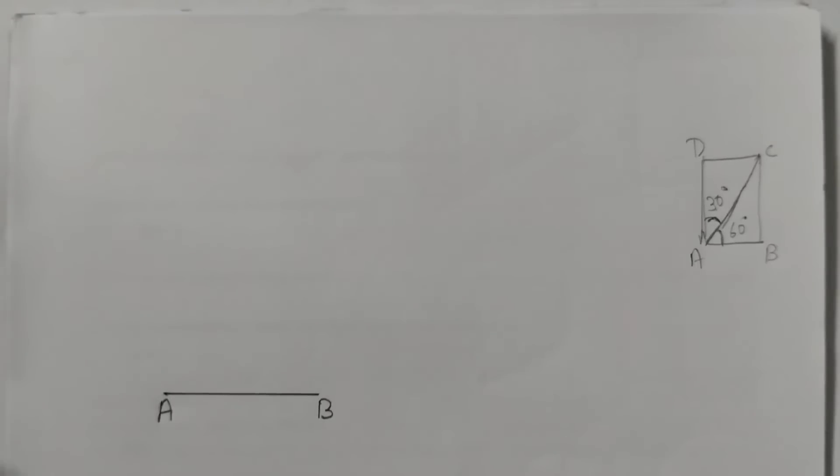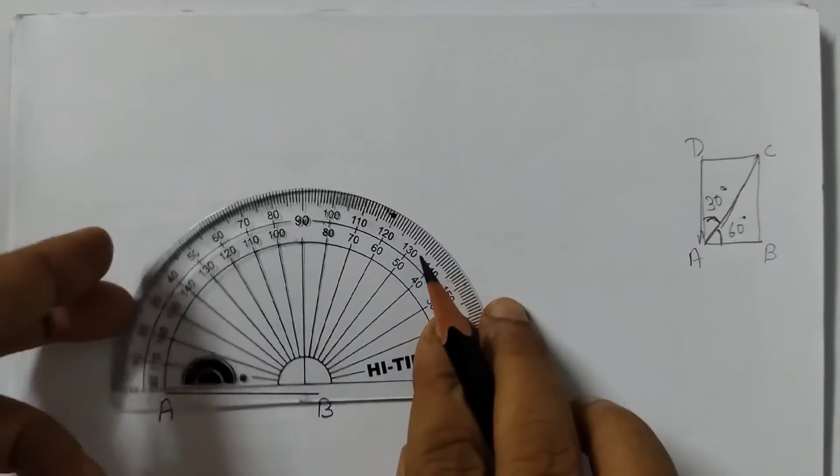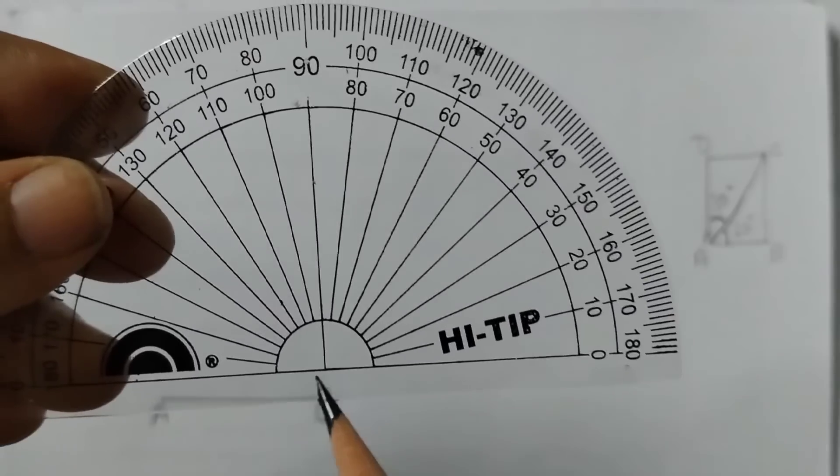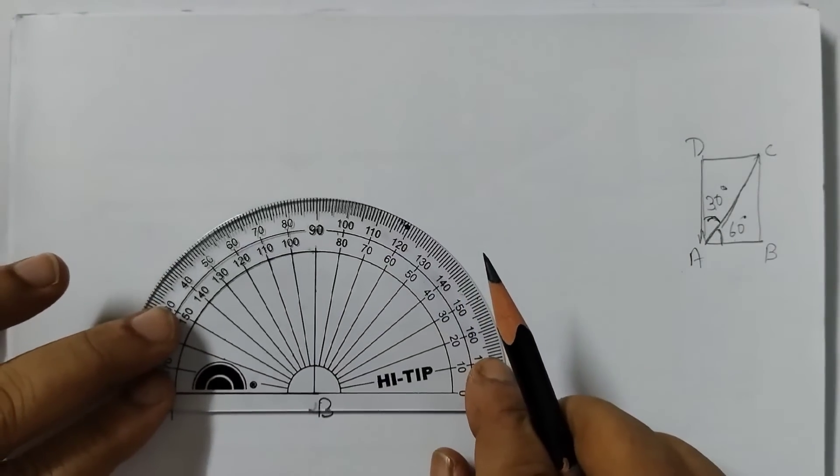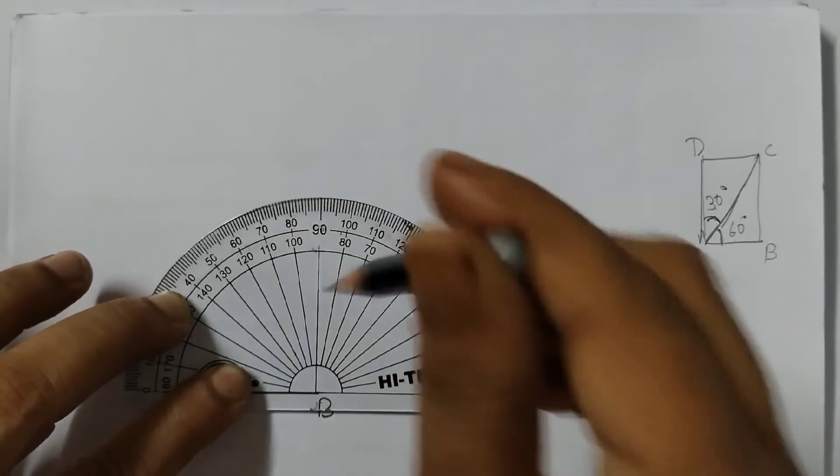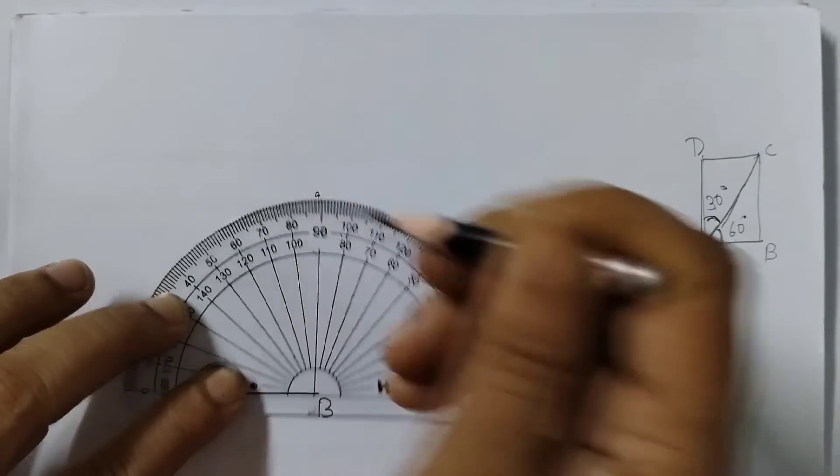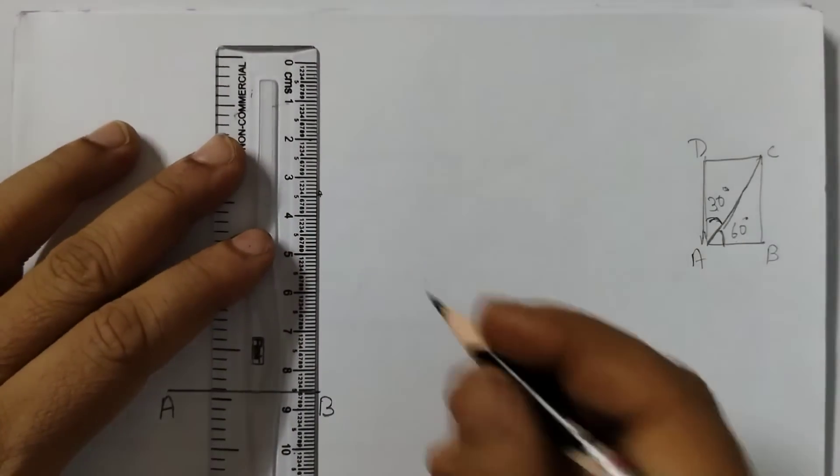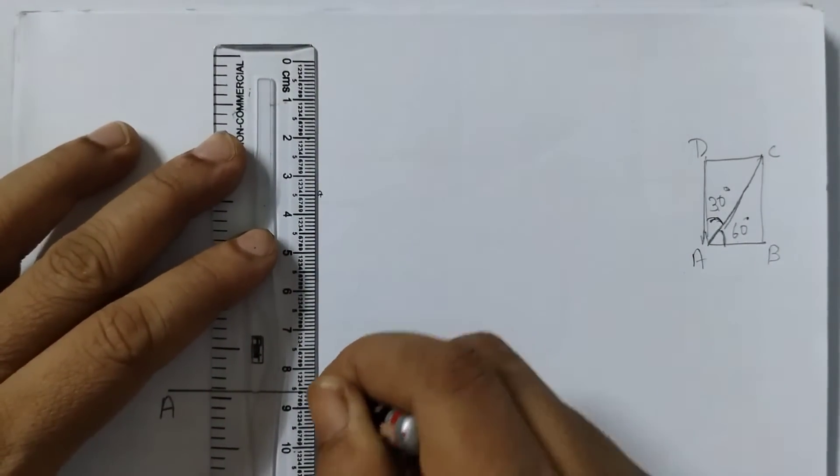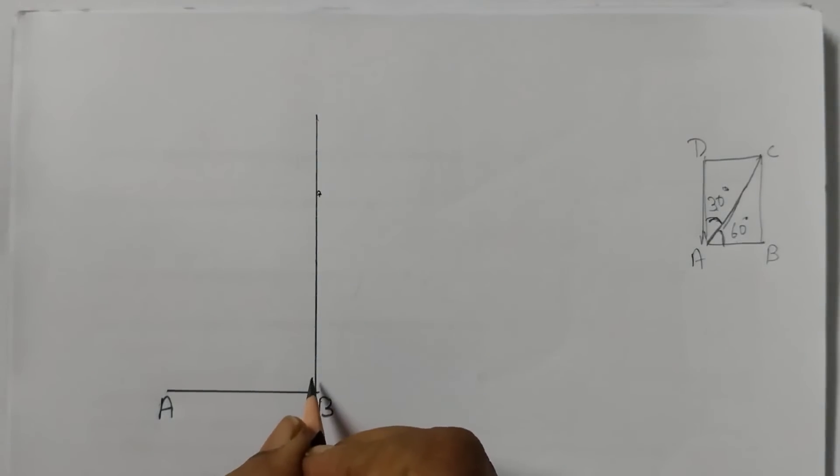Now we will take the protractor and we will draw a perpendicular passing through B. So this point here, you can see this point. We are going to place it here on B. This is the base. And we will draw. First we will mark a point here. And then we will join this point and B. Now this is the perpendicular.